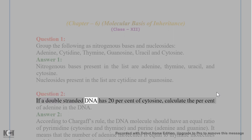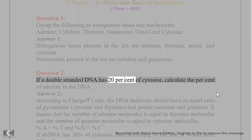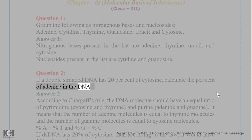Question 2. If a double-stranded DNA has 20% of cytosine, calculate the percent of adenine in the DNA. Answer 2.